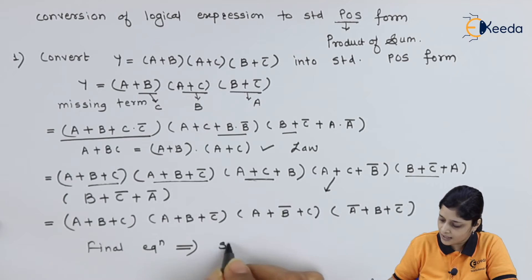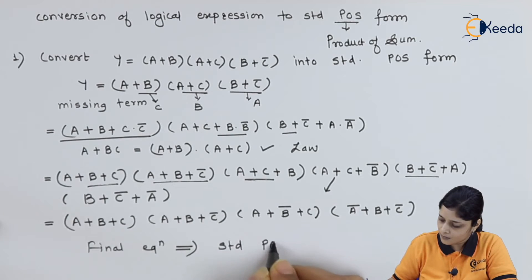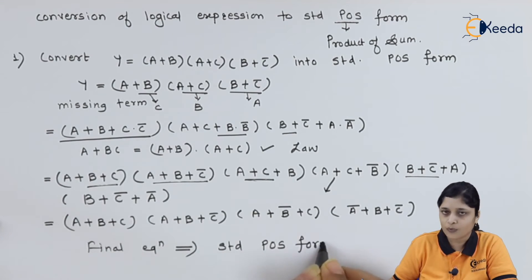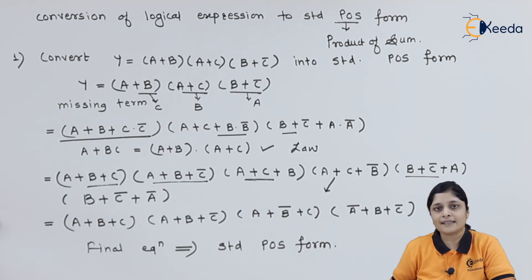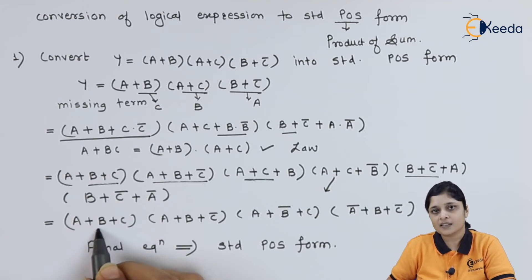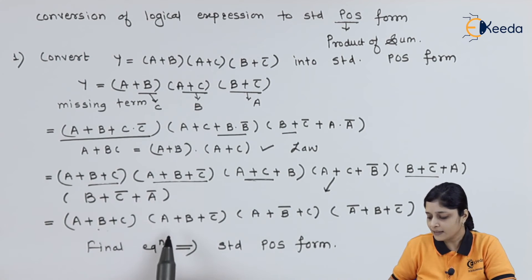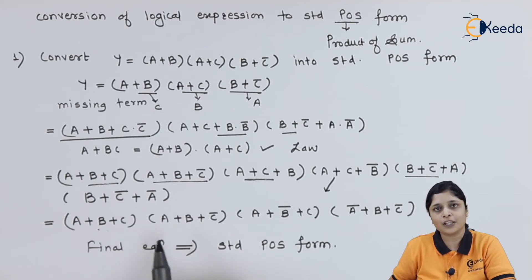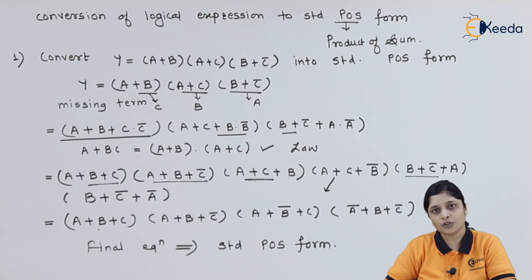This is the standard POS form. It is standard because it consists of all the literals present in the given equation — you should have three literals in each term and each term should be in POS form. This is all about conversion of a logical expression to standard POS form. Let's take the second example.